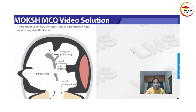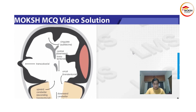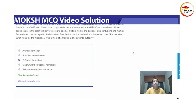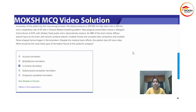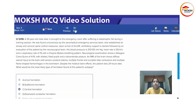With subfalcine herniation, the image shows it well. These usually do not present with flame-shaped hemorrhages. As mentioned, Duret hemorrhages are specific to central herniation. Apart from that, subfalcine herniation can present with anterior cerebral artery infarction, so if anything is pointing towards that, think of subfalcine.